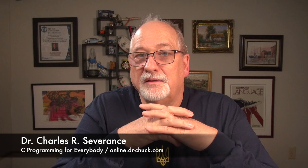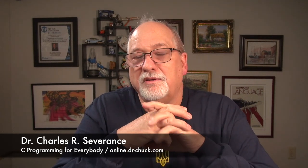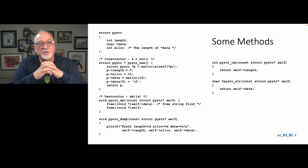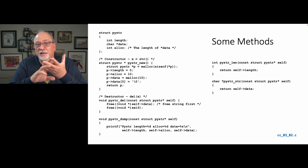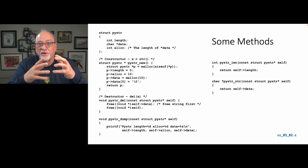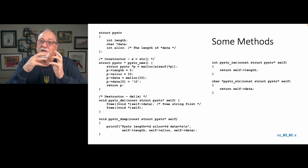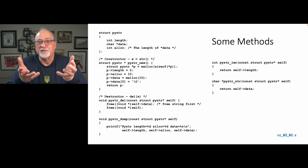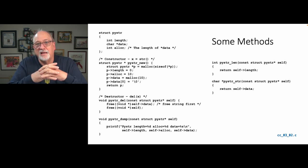You might ask why we don't just let calling code access self length directly. This is encapsulation — we don't want to reveal that we're keeping track of length in this variable, because we don't want the calling code messing with it. Length, data, and alloc are kind of private. Instead, call my function and I will give you what you want. That allows me to change the name of length or interpret it differently — the object writer is in control of the contract with the outside world. These are called accessors.